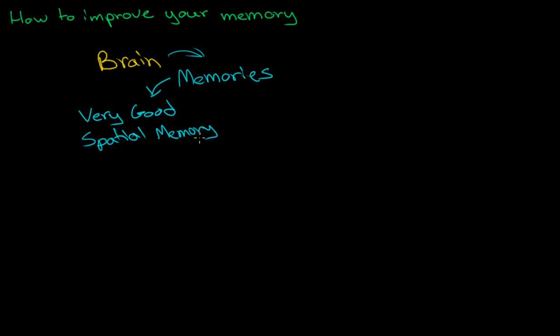From an evolutionary standpoint, human beings have evolved to need that spatial memory. When have we ever needed to remember random strings of digits? When have we ever needed to remember phone numbers in the past? That's a very new, modern thing. And so, these kind of unstructured data types are very bad, very hard to remember.